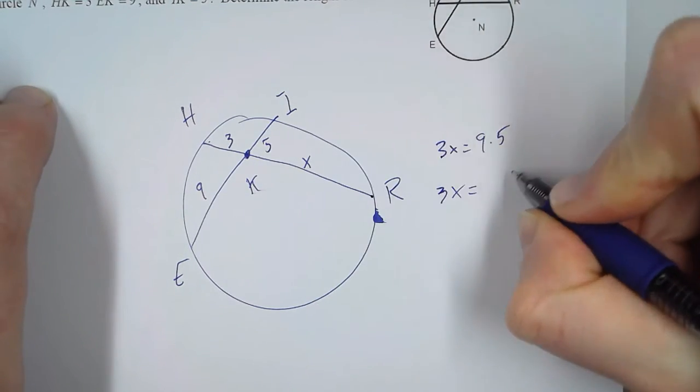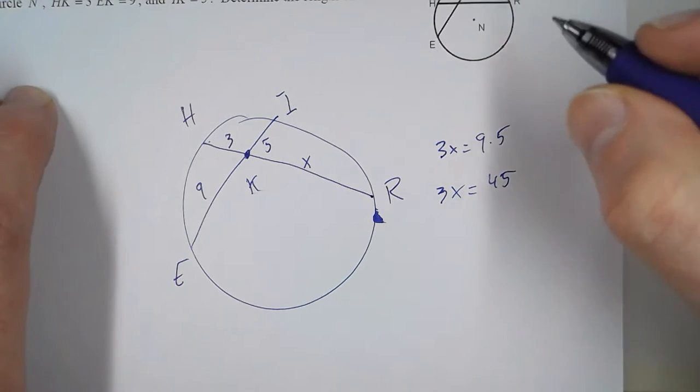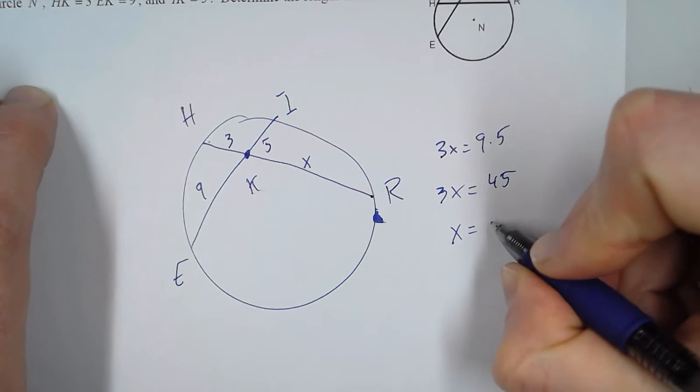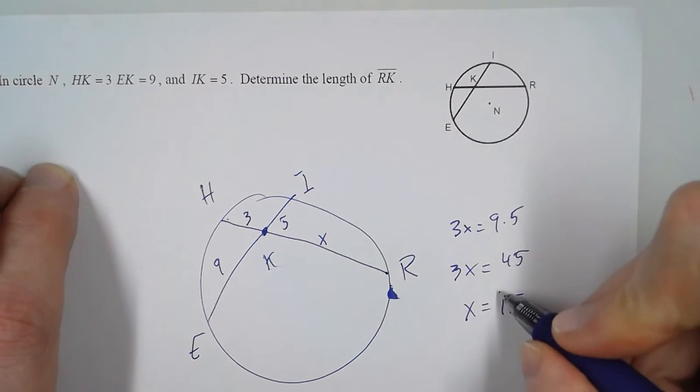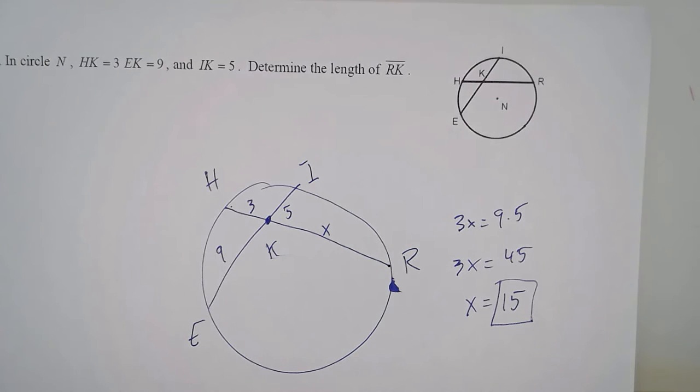So 3X equals 45. To get X by itself, we divide by 3, and we get 15. And X is the length of RK. So that means that's our answer, and we're done.